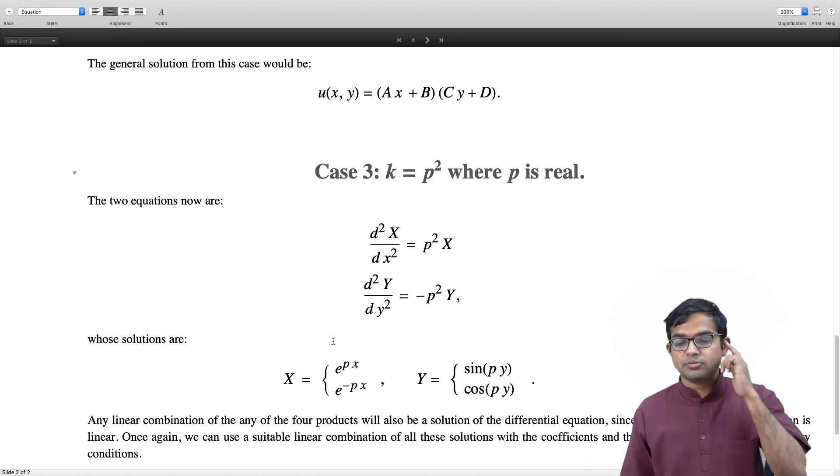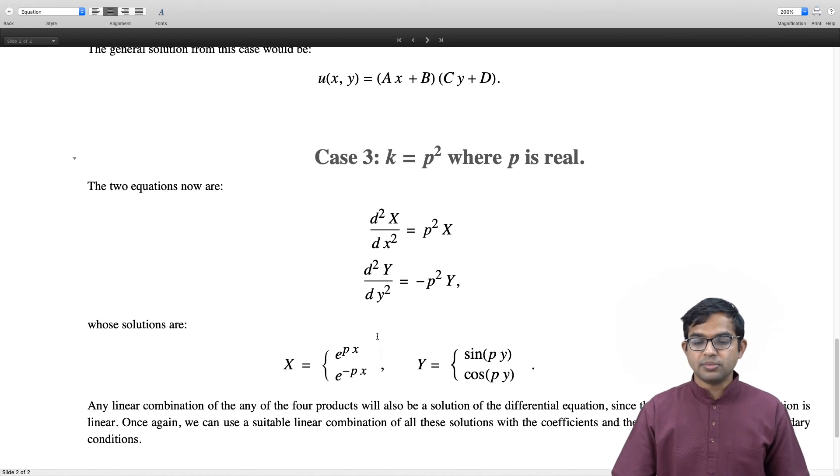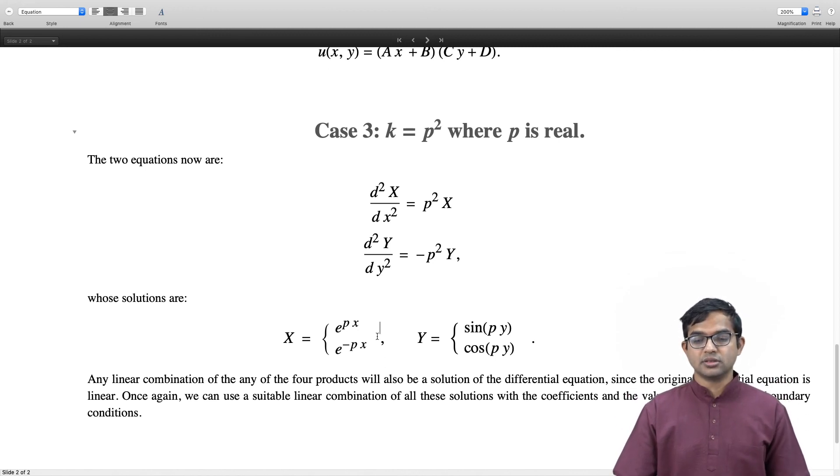We will have to combine coefficients—combine all these solutions for different values of p. An arbitrary superposition of all of these is going to be a solution, but if all the boundary conditions must be satisfied exactly, then we will see that all these coefficients also get fixed in a very precise manner. That is coming up in the next lecture.